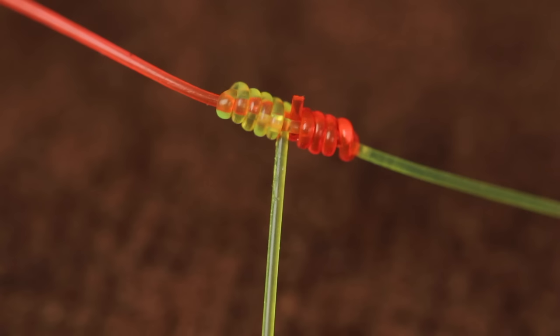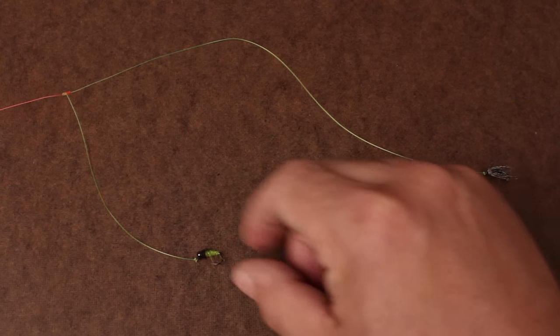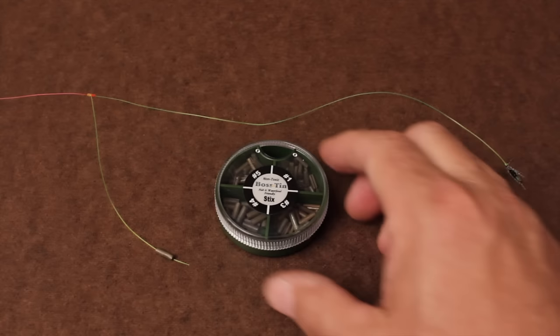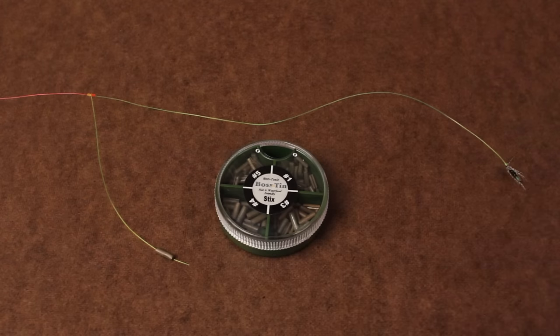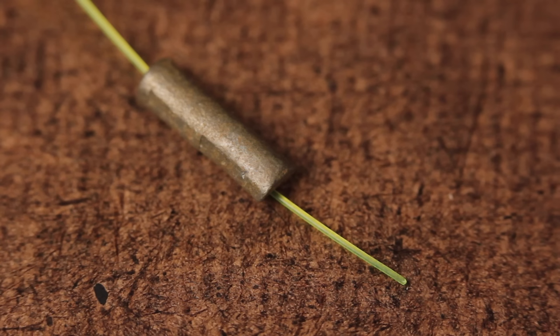In addition to making tapered leaders and tying on tippet material, blood knots can be used in dropper rigs. Just leave one of the two tags long enough to tie on a second fly. Or you can add weight to the tag, so if you get hung up on the bottom, the weight will simply be pulled off or the tag will break while you attempt to free the rig.